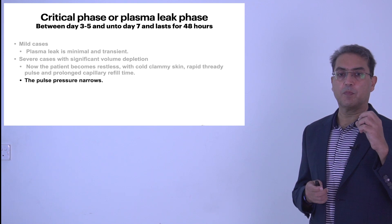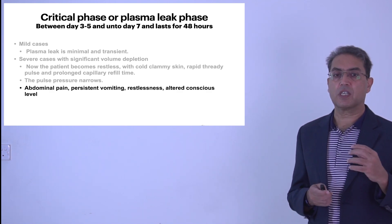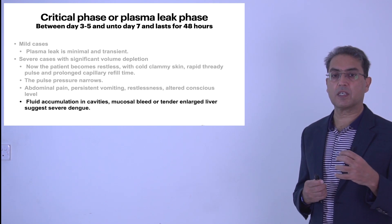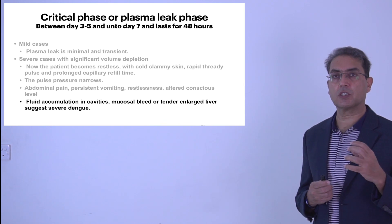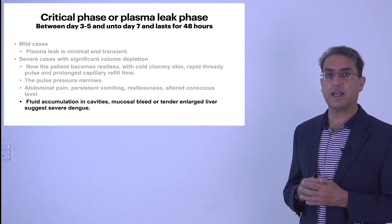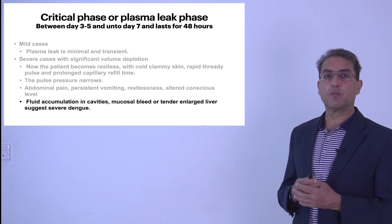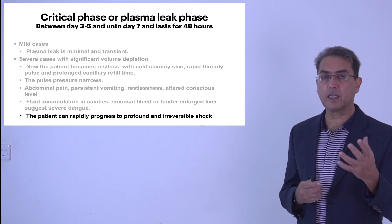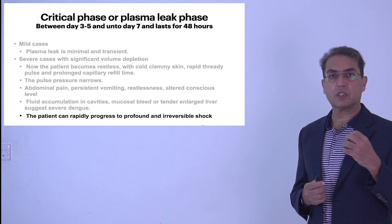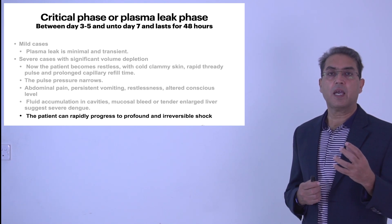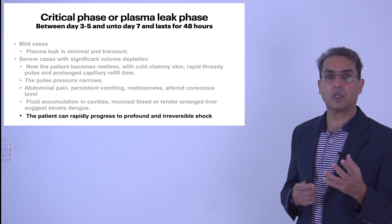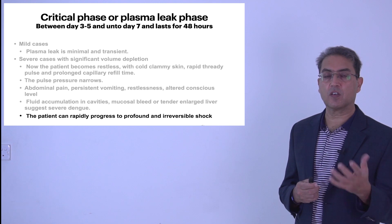The patient may have abdominal pain, persistent vomiting, restlessness, and alteration in conscious level. Fluid starts accumulating in cavities — on ultrasound you may see pleural effusion and abdominal ascites. There is mucosal bleeding, and an enlarged tender liver suggests severe hepatic congestion, which is usually the severe form of dengue. The patient can rapidly progress to profound and irreversible shock. Recognition is critical: if a febrile patient develops persistent vomiting, restlessness, abdominal pain, low pulse pressure, poor peripheral perfusion, or tender hepatomegaly, they have entered the leakage phase.